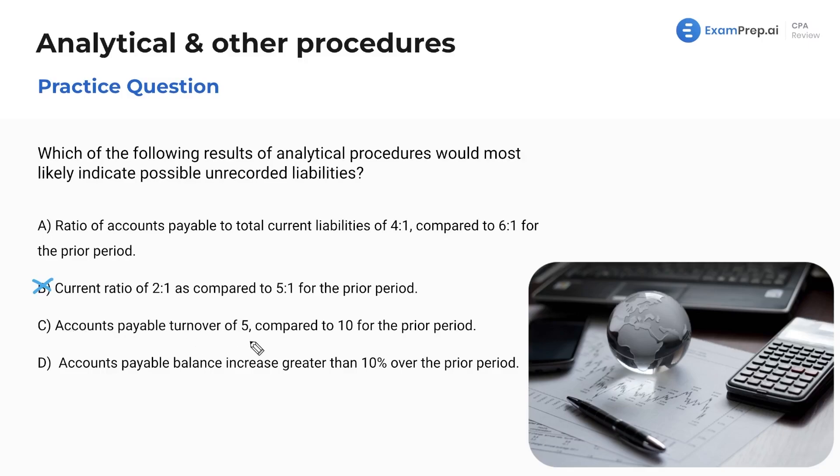Now accounts payable turnover of five compared to 10 for the prior period. Give you a second to think about it. What is our accounts payable turnover ratio? I want you to have these memorized. Now in this exam, a lot of times they will be given. But I mean, if you saw a multiple choice question on the exam, it's not given. SIMS, yeah, they could give you the ratios. But in this case, on multiple choice question, you're not going to be given the actual ratios. Going once, going twice, making sure you have these memorized. Your accounts payable turnover ratio is going to be your total credit purchases, which is total expenses divided by your average accounts payable for that period. Is that going to indicate possible unrecorded liabilities? I'm going to say the lower the accounts payable turnover ratio, while it could indicate financial distress because it's showing that we're not able to pay back our bills, it wouldn't necessarily indicate unrecorded liabilities.